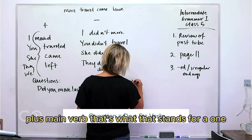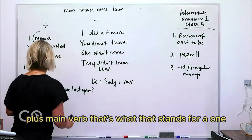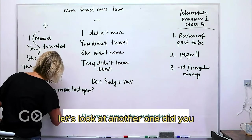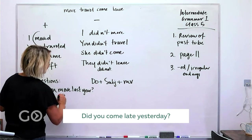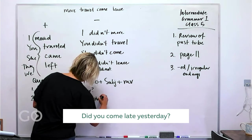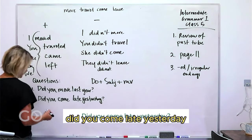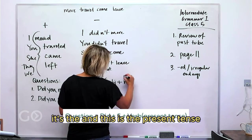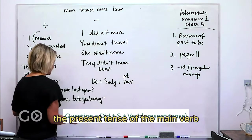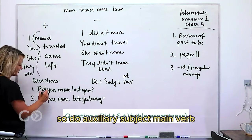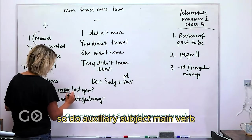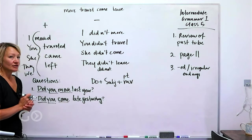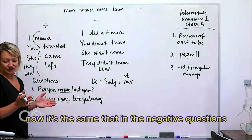Let's look at another one. Did you come late yesterday? So what's happening again? It's the present tense of the main verb. So do auxiliary, subject, main verb. Do auxiliary, subject, main verb. Now it's the same then in the negative questions. You can say, it's like a clarifying...